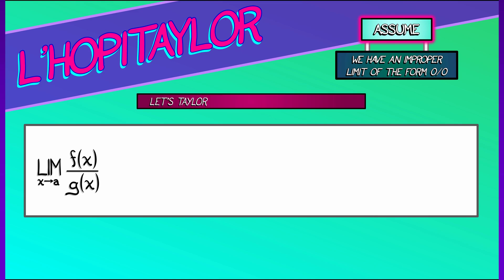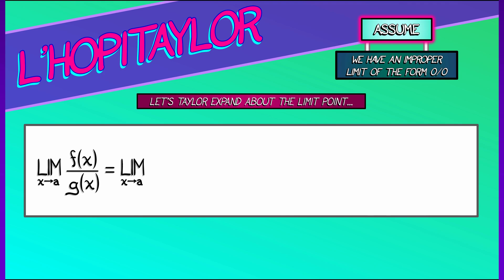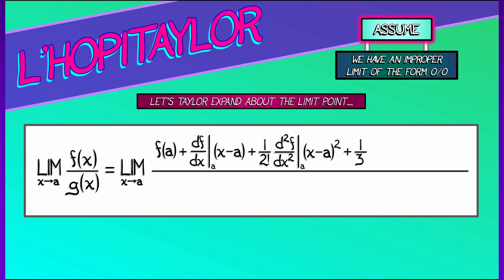Well, instead of doing L'Hopital's, let's Taylor expand about this limit point. This is going to give us the limit as x goes to a of what? When I Taylor expand f(x) about a, we get f(a) plus the derivative of f at a times (x - a). And then you get the second order term and the third order term. You get this polynomial in quantity (x - a).